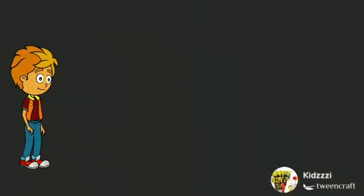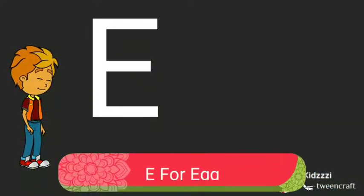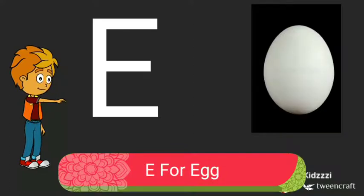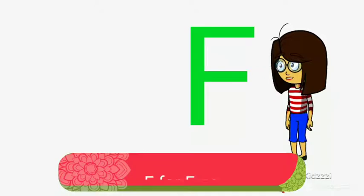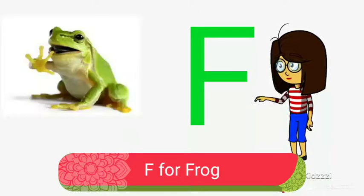E, E for egg. Hen gives us egg. F, F for frog. Frog is green in color.